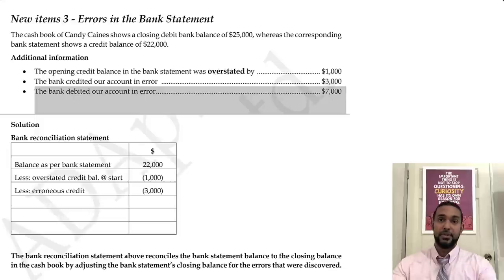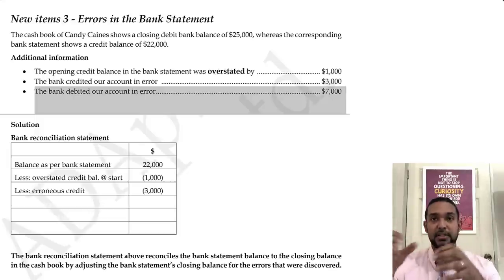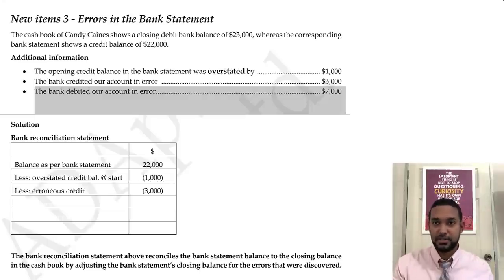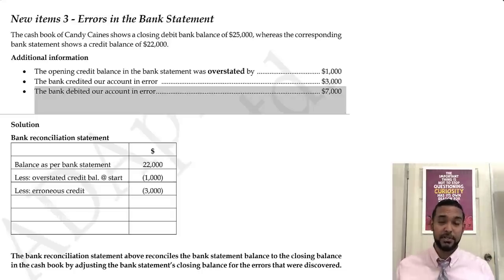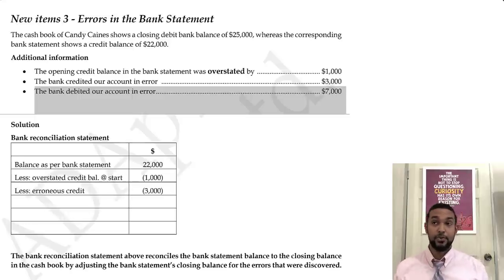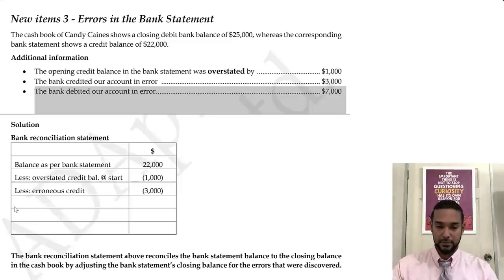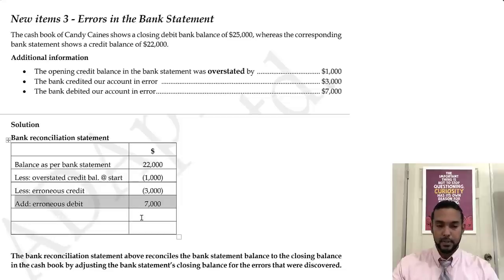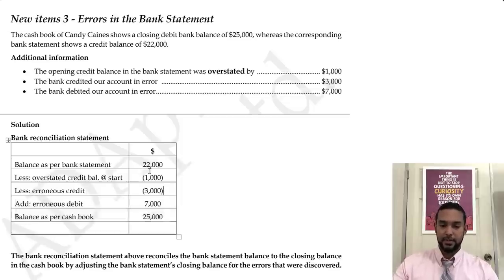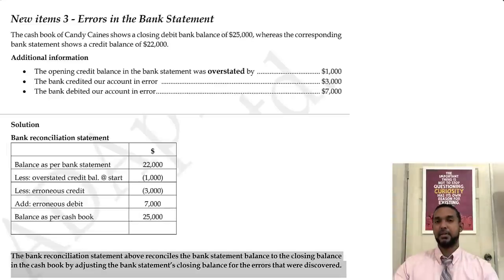The bank debited our account in error. From the bank statement perspective, debits are decreases — the bank may have charged us in error. For our bank reconciliation purposes, we make an adjustment in the bank rec showing we fixed that error. If they took something out that they weren't supposed to, we add it back — $7,000. So: 22 minus 1 is 21, minus 3 is 18, plus 7 is 25, which matches the cash book balance.